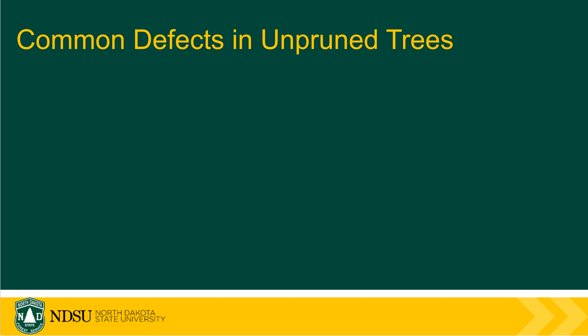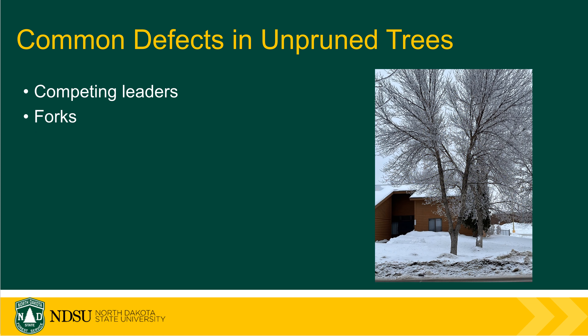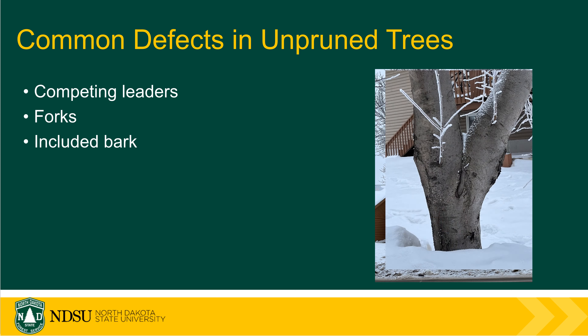Here we'll go through some examples of common defects in unpruned trees. Competing leaders is a pretty common one. If you look at this buckeye in the picture, that leader shooting off to the left is actually taller than the central leader, and if left unchecked it's going to turn into a fork someday. In this ash tree you can see the fork is about six feet off the ground, and as the tree keeps growing each of those stems coming off the fork are going to get heavier and eventually that fork will be a point of failure. Many forks have what's called included bark, where each stem puts on additional layers of bark as it grows in diameter, creating a weak point.